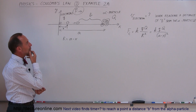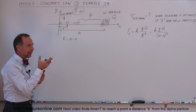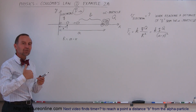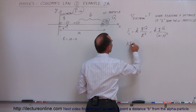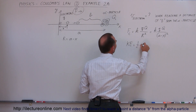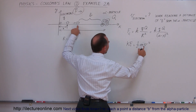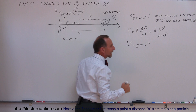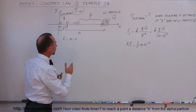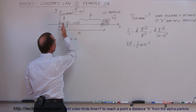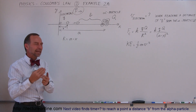Next, we want to find the velocity, which depends on how much kinetic energy is put into the electron. We know the kinetic energy equals one-half mv squared, so if we know the kinetic energy at that point, we can find the velocity. But notice that the force changes constantly as the electron moves closer — the force becomes larger — so we're going to have to integrate.